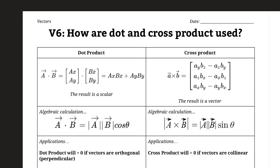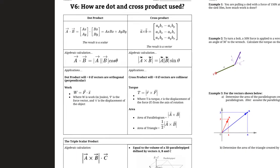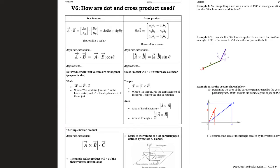We know some of the geometric properties of dot and cross product — how they can be used to find the angle between two vectors, or to find the normal direction vector of a plane. But outside of pure math, what are the applications of dot and cross product? There are some actually very useful ones. This page is essentially a summary of all the different ways we could use dot product and cross product in this course.